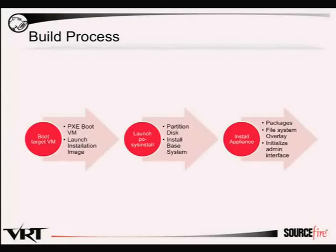For the VM build process: we boot the VM via PXE and launch an installation image of FreeBSD on NFS root. That NFS image has all the things we need, including our scripts. Once that's finished, from rc.local we launch PCSysinstall in automated installation mode, which handles most automation — partitioning, installation of the base image, and package installation.